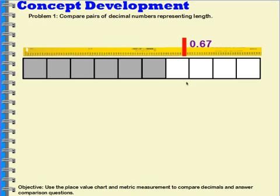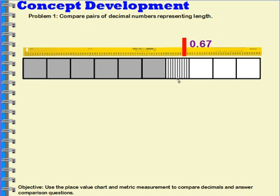Now if I go all the way to the next tenth, I'm passing up my mark. So I'll need to show the ten individual parts that make up this one-tenth piece. I'm going to break it up into ten parts, and then shade in seven of them, because right here I'm at 60 — so 61, 62, 63, 64, 65, 66, 67 — that takes me to there. So now I have shaded in 67 hundredths of this area model that is the same length as my meter stick.